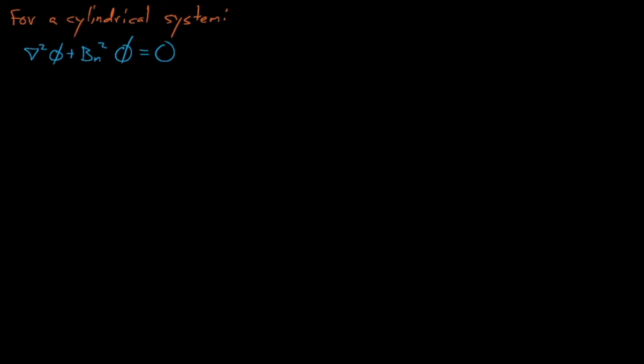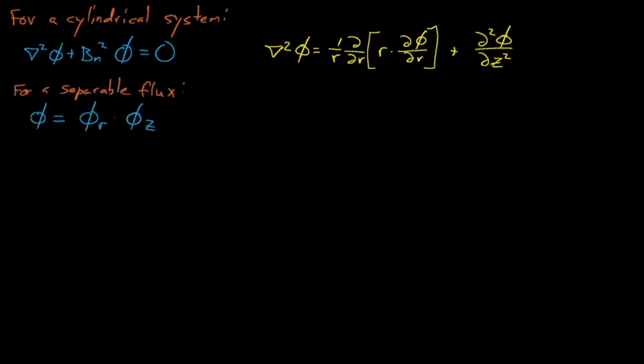In cylindrical dimensions, for example, the Laplacian equals 1 over r times d/dr of r times d phi dr, plus the second derivative of the flux with respect to z. We see that this expression contains one term that operates on the flux with respect to the radius and one term with respect to z. And so, we can rephrase our Laplacian operator as the combination of this r and z Laplacian component.